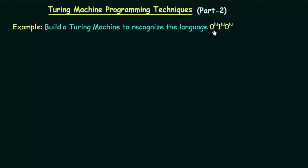This means that the number of zeros should be equal to the number of ones that follows, and the number of ones should be equal to the number of zeros that follows. This is the kind of language that we need to design. We know that this language is not a context-free language and we cannot use a pushdown automata to design it. We have proved that this language cannot be designed using a pushdown automata and hence it is not a context-free language.